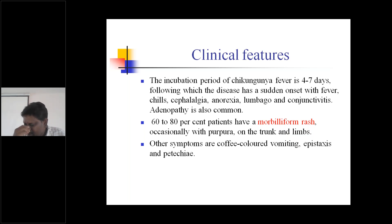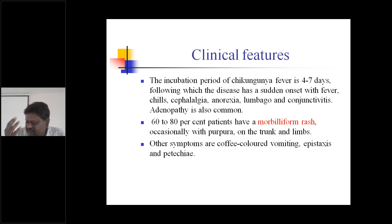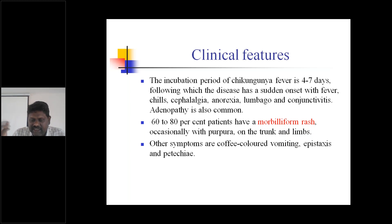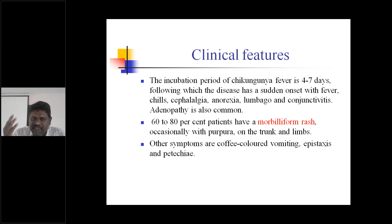In migraine, one side of the head has pain; other side is normal. In some cases there is throbbing type of pain — stress-related migraine or headache. Whereas in case of cephalalgia, pain is present throughout the entire head — severe headache throughout the head.